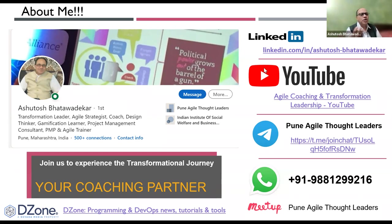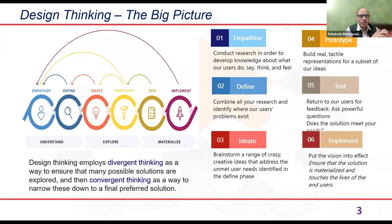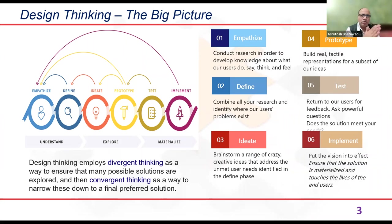A quick recap of last week: there's a video available on the YouTube channel covering the entire design thinking process from start to end — empathize, define, ideate, prototype, test, and implement — a six-phase non-linear process involving divergent and convergent thinking. You diverge to open up your sphere as wide as possible, then converge towards a solution.